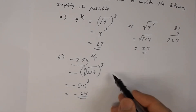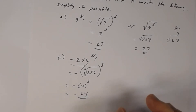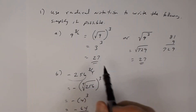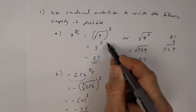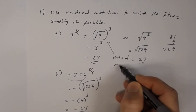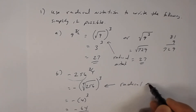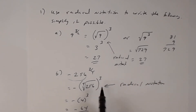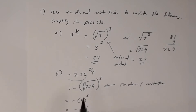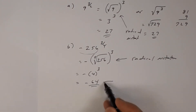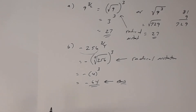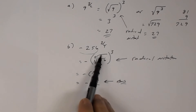When the directions say 'use radical notation,' the first thing you have to do is write the expression as a radical — that is your radical notation step. Then simplify to get the final answer. The worksheet will say write it as a radical, then state the answer.